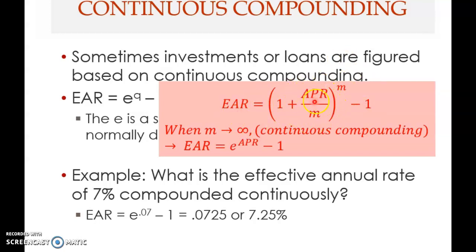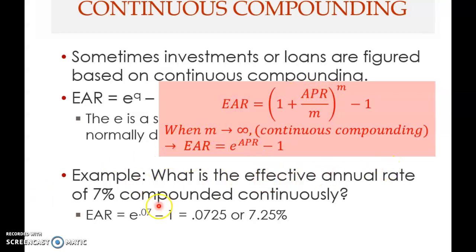When m approaches infinity, we call this continuous compounding. We can't use the normal formula anymore. Instead, we use EAR = e^(APR) − 1, where e is the base of the natural logarithm. For example, what is the EAR of 7% APR compounded continuously? You take e raised to the power of 0.07, then subtract 1.